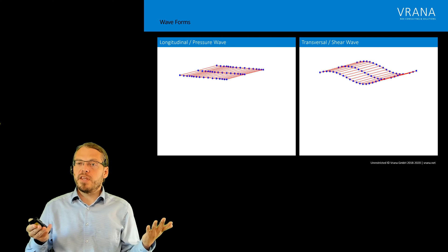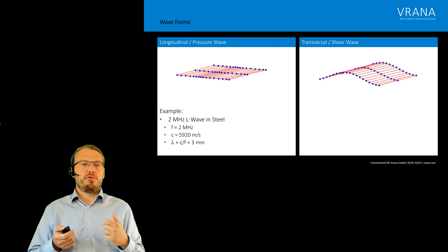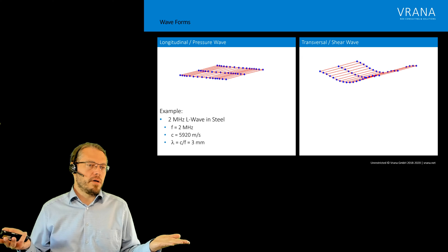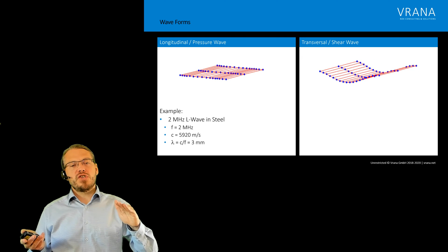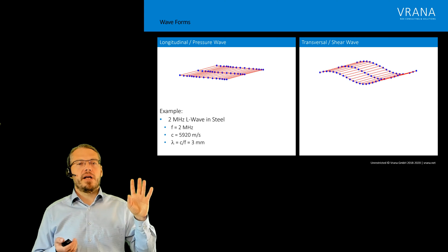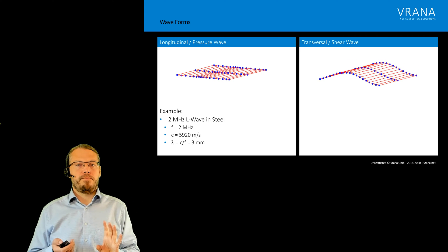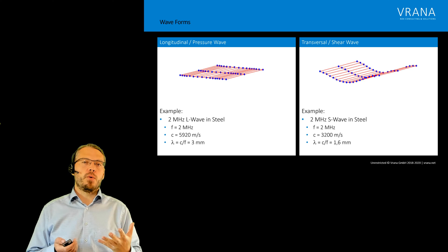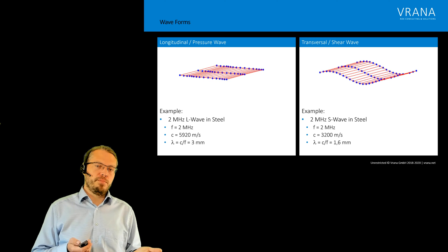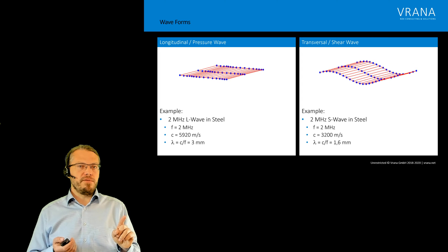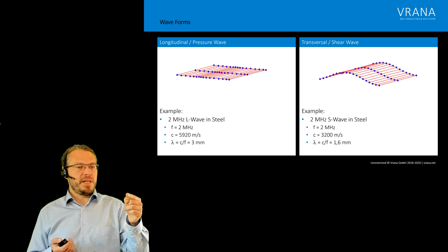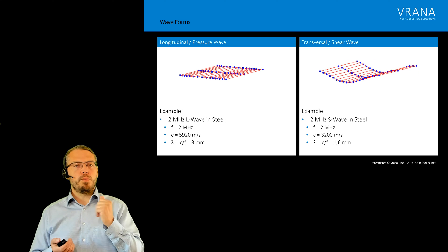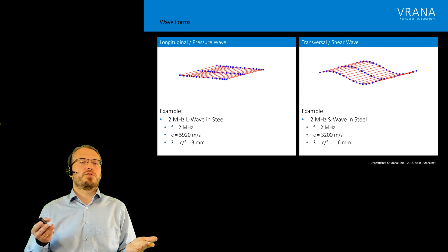Now what's one of the differences between the two of them? If we take for example a 2 MHz wave in steel, we're talking about a frequency of 2 MHz and the sound velocity in steel is about 5920 m/s for a longitudinal wave. For a shear wave, with the same frequency, the speed of sound is slower. Now it's only 3200 meters per second which results in a different wavelength. The wavelength is our speed of sound divided by our frequency, so it's 3 mm for a longitudinal wave and it's about 1.6 mm, which is about half, for the transversal wave.